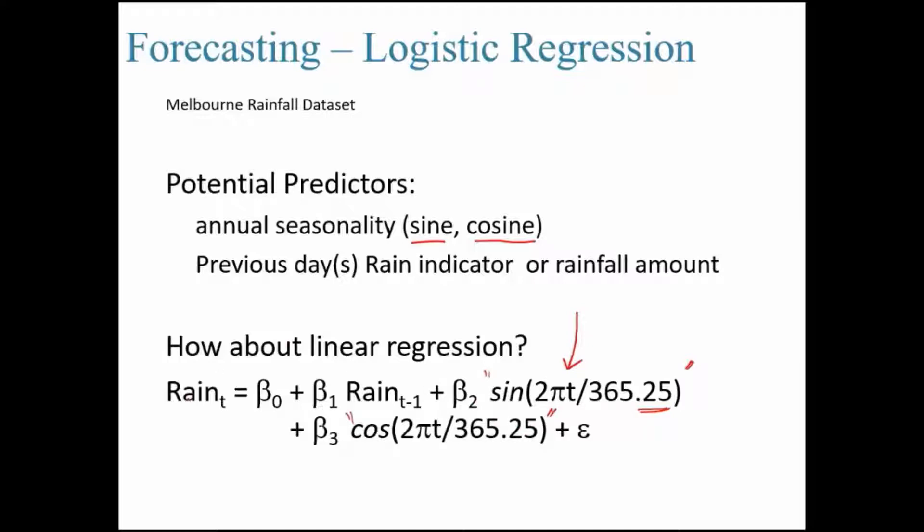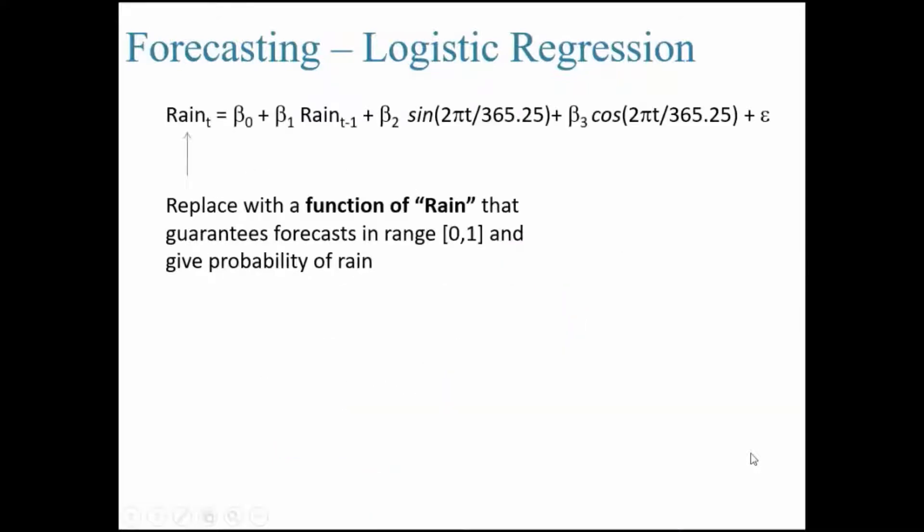Given that context, if you want to forecast the rain at time period t, then you need to consider rain at lag 1 and consider sine and cosine values. That will help you capture the seasonality.